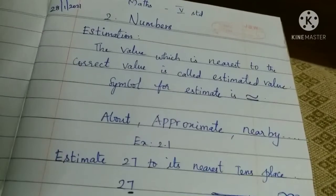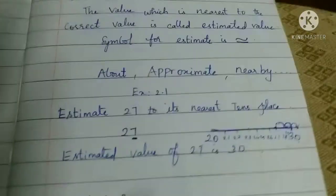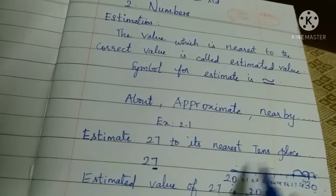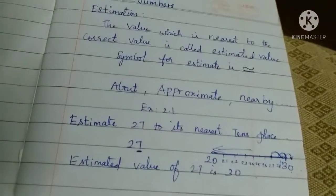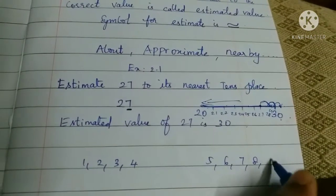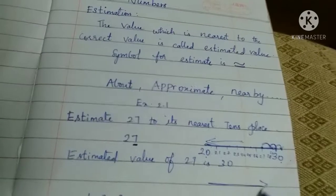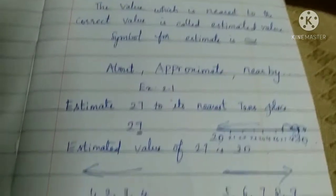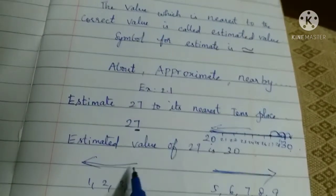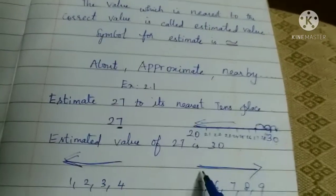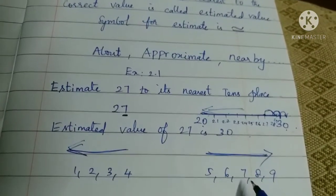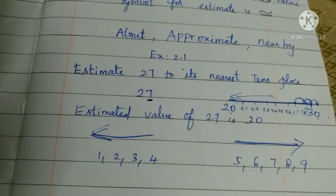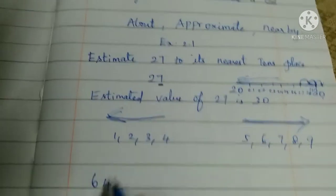You can remember the rule like this: if the units digit of a number is 1, 2, 3, or 4, you go backward to the lower tens. If the units digit is 5, 6, 7, 8, or 9, you go forward to the higher tens. Now let us take the number 64 and find its estimated value.